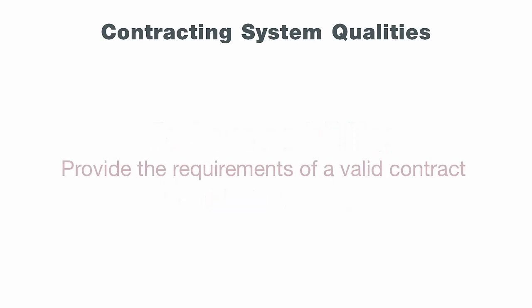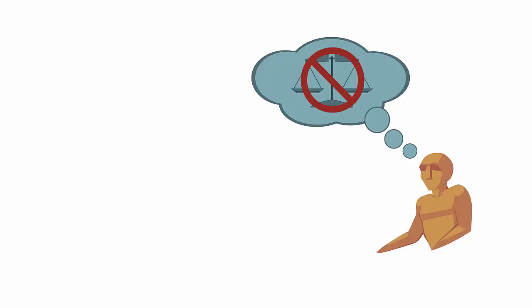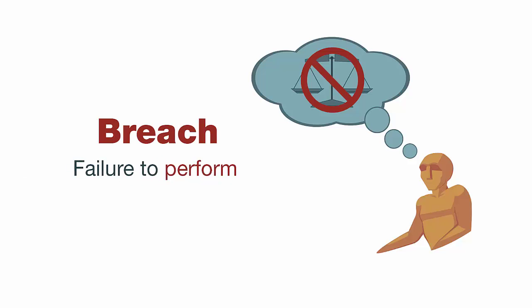A contracting system must also provide guidance for the performance of a contract. It must provide rules as to when a party has performed according to the requirements of the contract, which means the parties need to know with certainty what their obligations are and when those obligations are complete. A contracting system lets us know about issues of performance and termination of a contract upon completion. When a party fails to keep her promise under a contract, we call that a breach — a failure to perform — and a contracting system will set out rules for what constitutes breach.